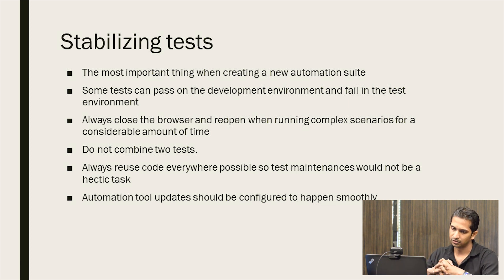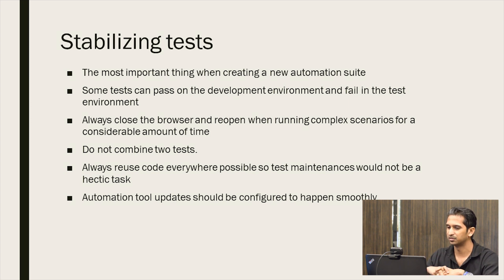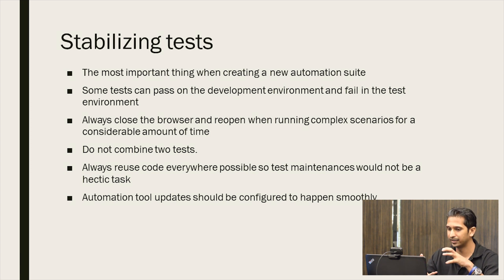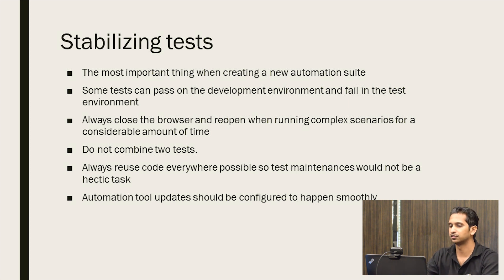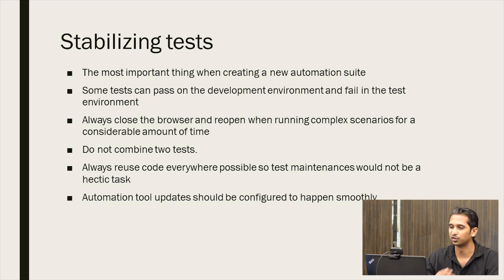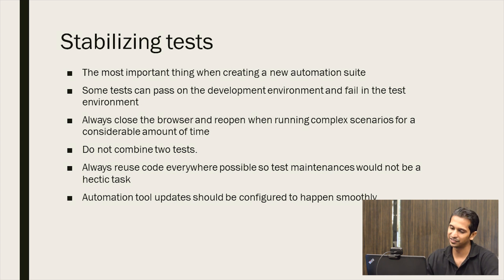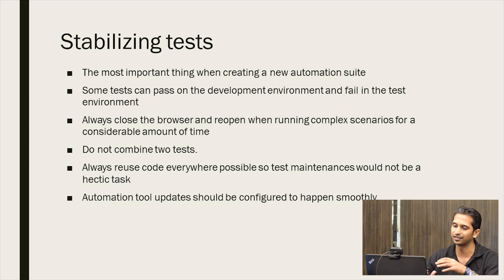The last point is that automation tool updates should be configured to happen smoothly. You have NuGet packages and similar mechanisms to update your test automation software. When you get an automation update, it's better if it happens automatically rather than you taking assemblies and copying them yourself. That's also why I said to select an established tool — in an established tool these issues are taken care of by the vendors.